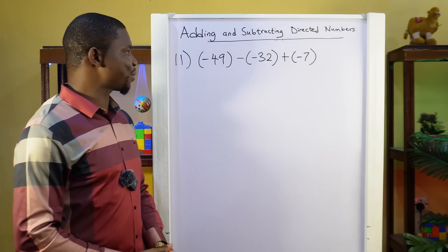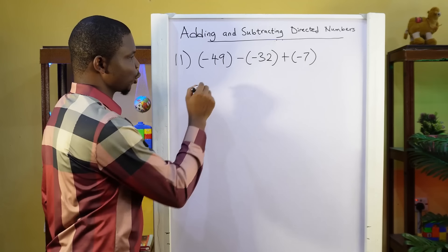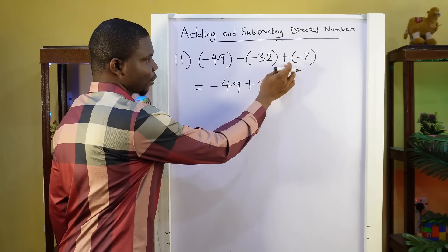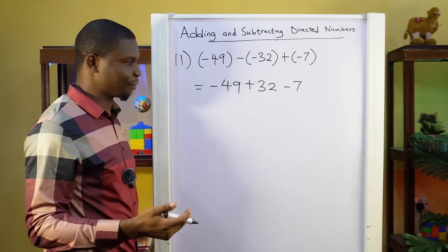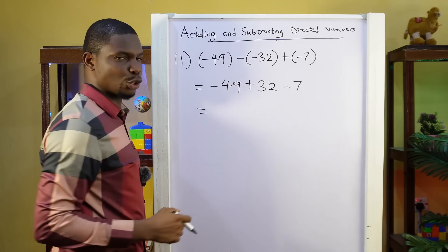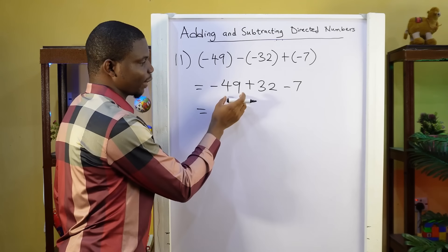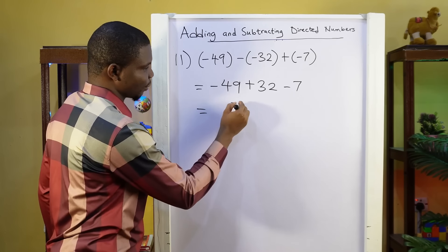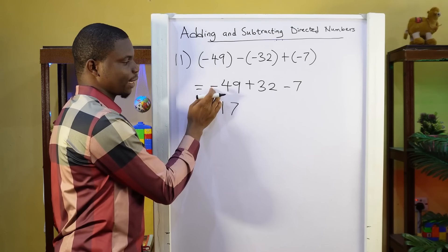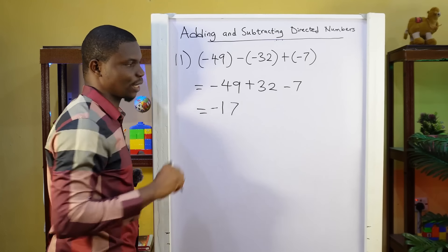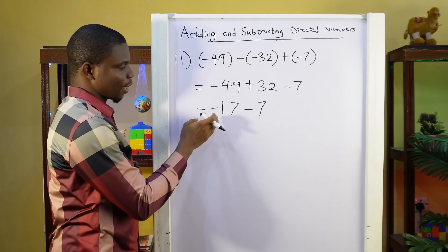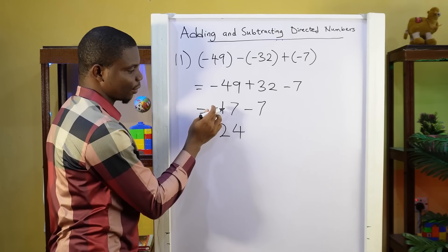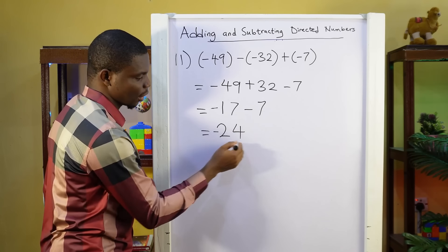Question 11: minus 49 minus minus 32 plus minus 7. Let's open the brackets: we have minus 49. Minus changes the sign inside the bracket, so this would be plus 32. Plus doesn't change the sign inside the bracket, so we still have minus 7. Minus 49 plus 32 — different signs, so we find the difference: 49 minus 32 is 17. We take the sign of the bigger number, giving minus 17, then minus 7. Same signs, so we add: 17 plus 7 is 24. We take negative because this is minus minus. So the answer is minus 24.